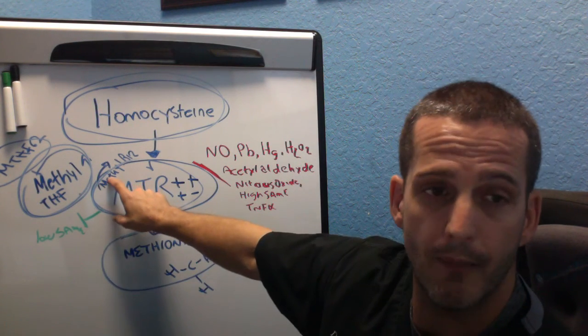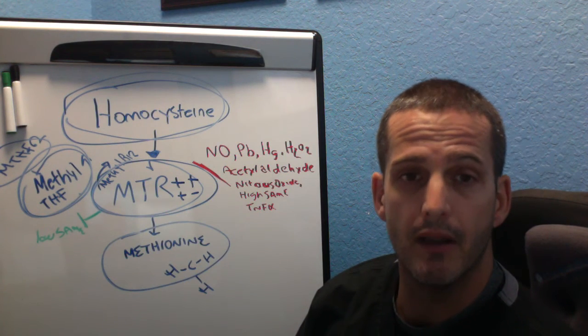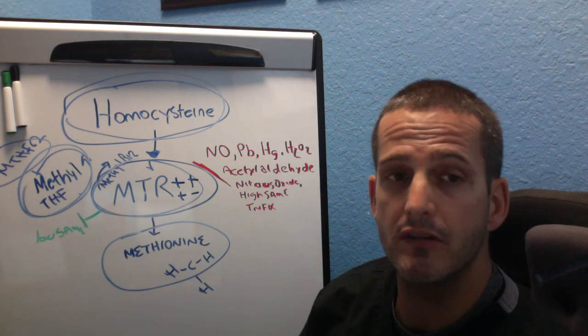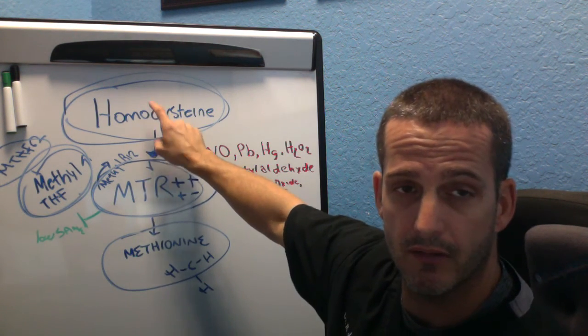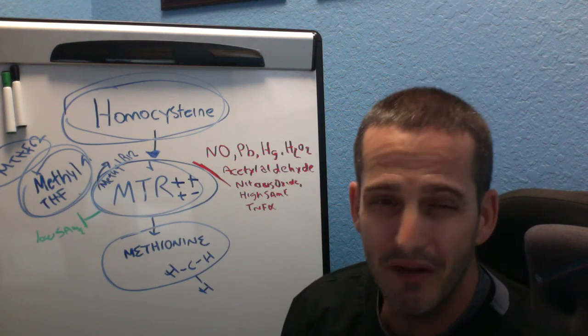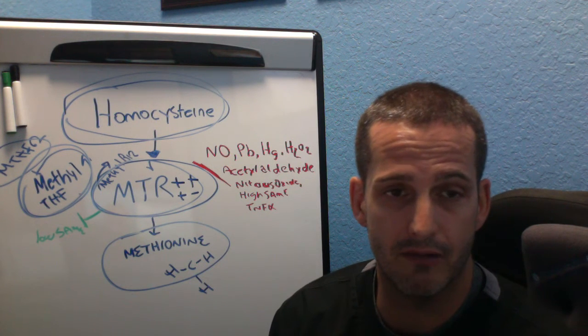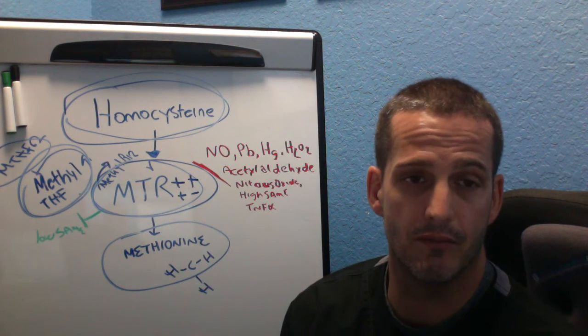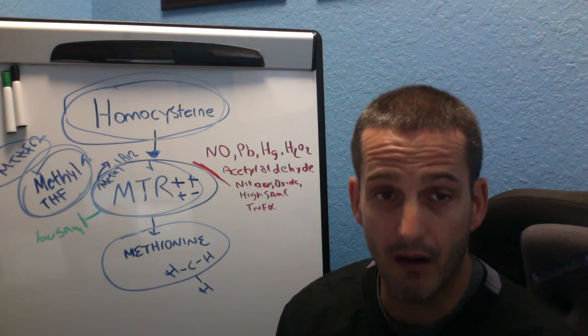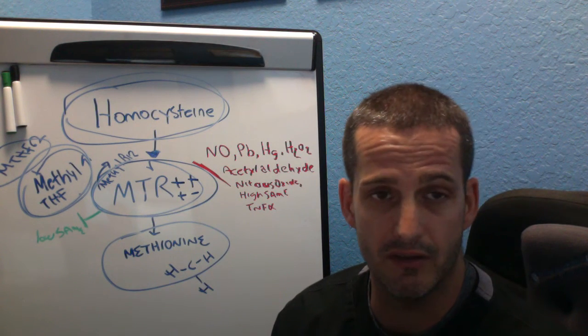And you can have a triple whammy in terms of methylcobalamin. You need methylcobalamin also as a cofactor in order to make homocysteine into methionine. So it's really, really important that you not just think of it in terms of MTHFR. You need to think of it in terms of MTR and MTRR. Those are very, very important genes as well.